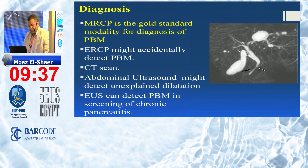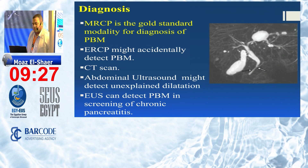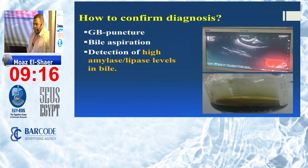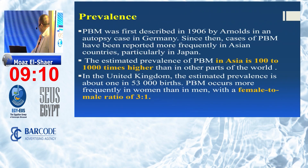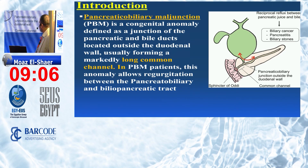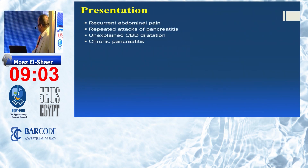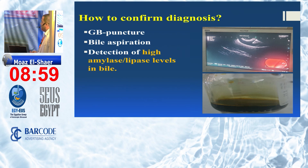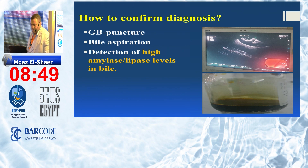EUS can detect pancreatobiliary maljunction during screening for chronic pancreatitis. As endosonographers, we are referring doctors for chronic pancreatitis, and pancreatobiliary maljunction is one of its causes. To confirm the diagnosis, gallbladder puncture is usually performed — bile aspiration with detection of very high amylase and lipase levels in the bile confirms the reflux of pancreatic juice into the biliary tree. This has already been done in our university hospital.